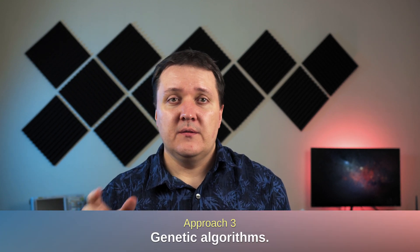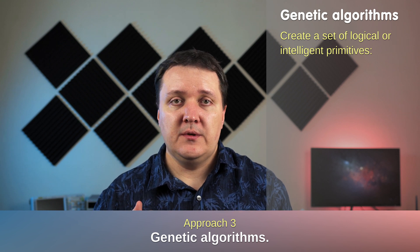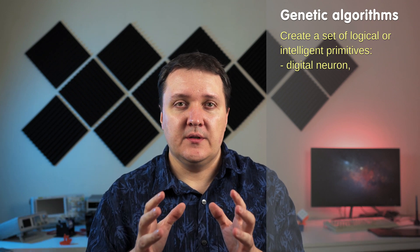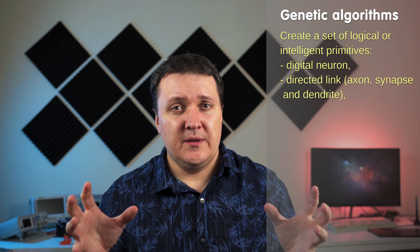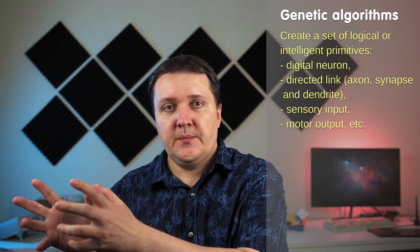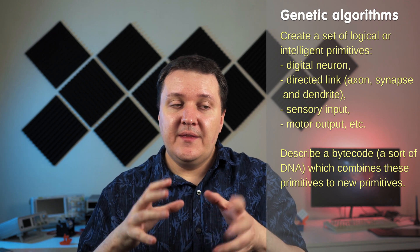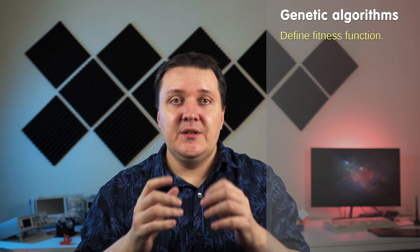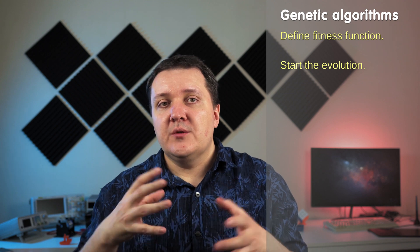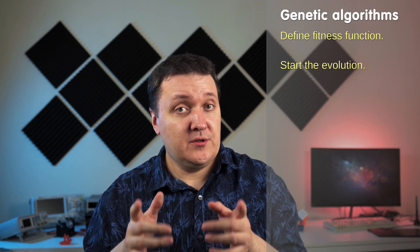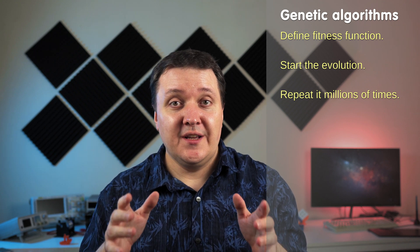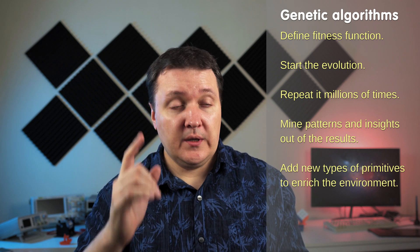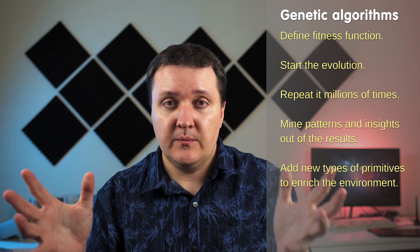The third approach is genetic algorithms. We can create a set of logical or intelligent primitives — candidates to be building blocks of intelligence. For example, digital neurons with a small set of parameters, and directed links or synapse connections between them which can inhibit or excite the target neuron when the source neuron spikes. We then combine those primitives, combine combinations of those primitives, and pass this problem to the next generations. We need to come up with a fitness function so we can run evolution via genetic algorithms, which will hopefully converge to something meaningful. If we run millions of evolutions and compare results, we will probably find some interesting patterns. Along the way we can introduce new types of primitives to make the whole environment more versatile.